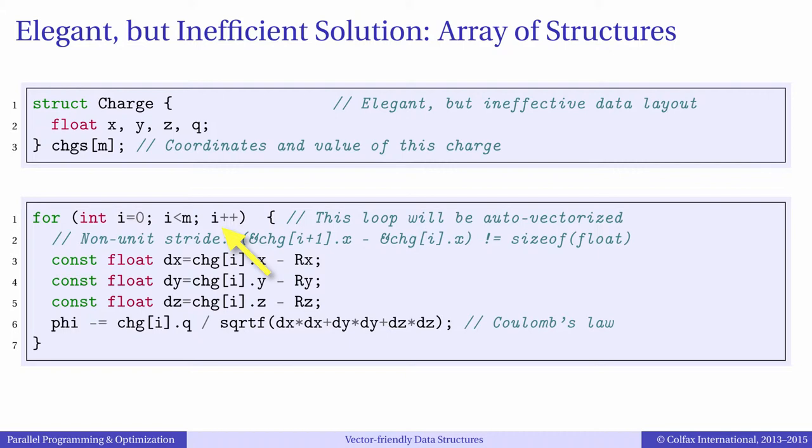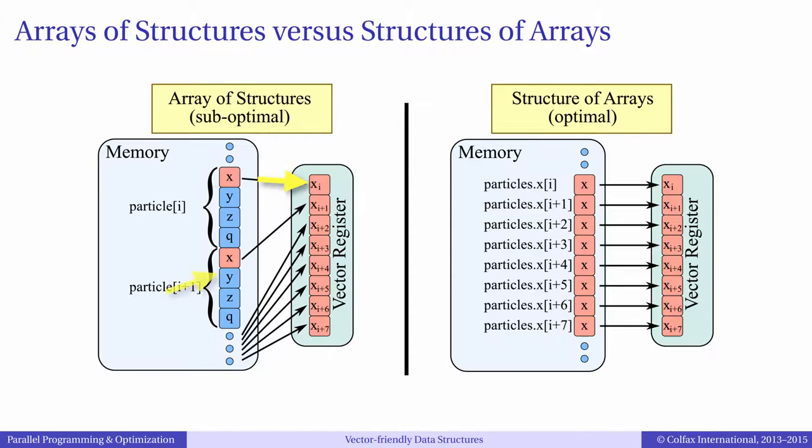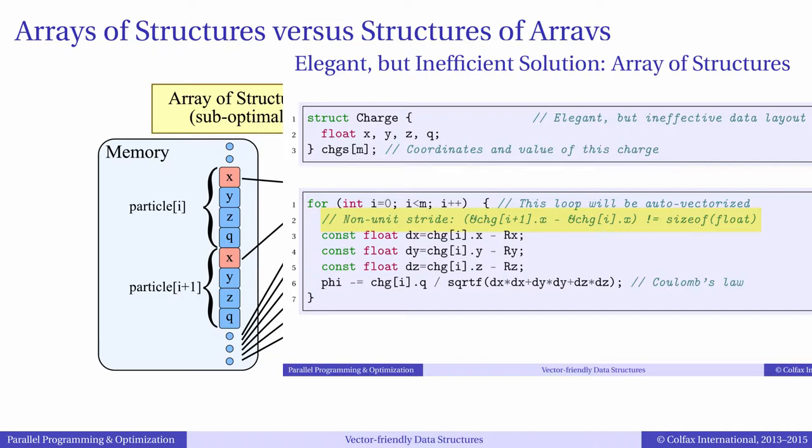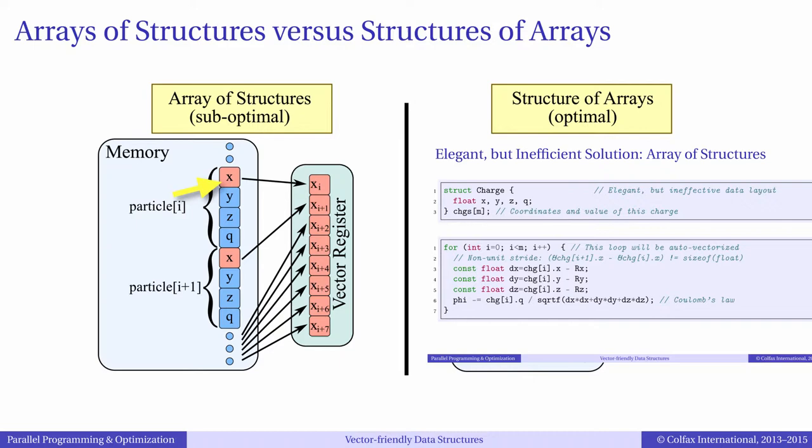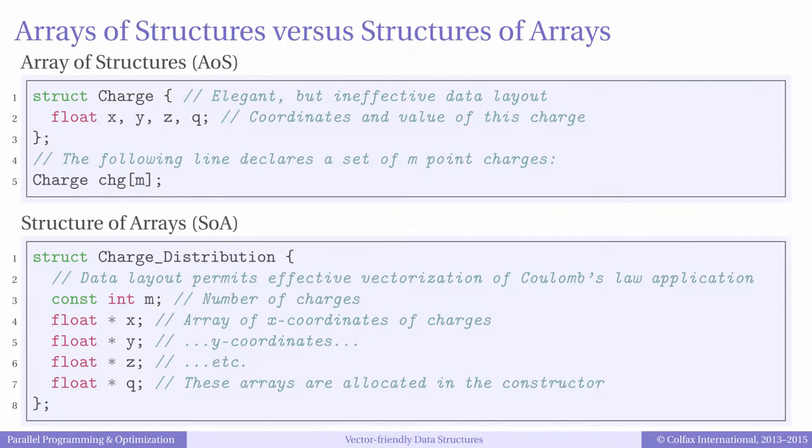The compiler will take 16 iterations in i, load 16 values of x in a vector register, populate another vector with values of capital Rx, and then do subtraction. Similarly, for y and z and for the square root. The issue is the loading of values of x, y, z and q into a vector. We can see from the code that they are not contiguous in memory. The value of x for charge with index 0 is 4 values away from x for charge number 1, and so on.